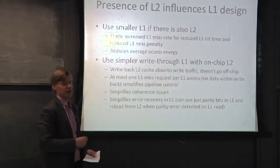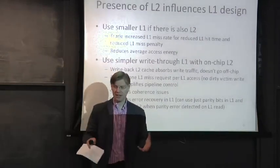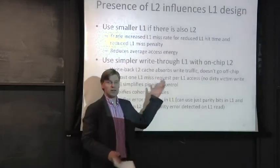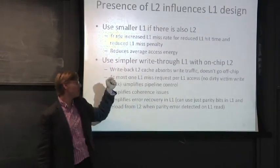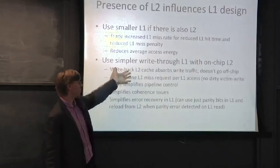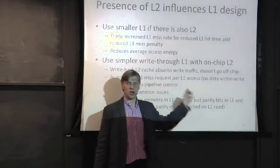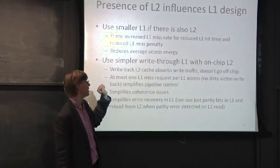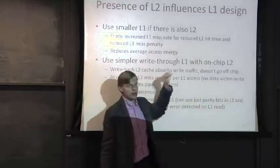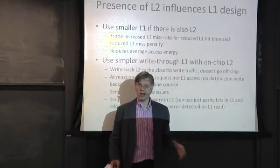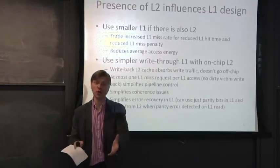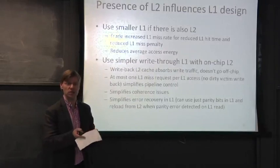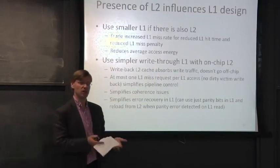With a level two cache, you can use it as a buffer to absorb write-through traffic — that traffic doesn't have to go off chip. You can have a write-back L2 that tracks all dirty data and handles evictions and invalidations, while the level one cache just writes through all data. This requires enough bandwidth between level one and level two, but that's typically much easier to come by since both caches are located near each other on modern chips.